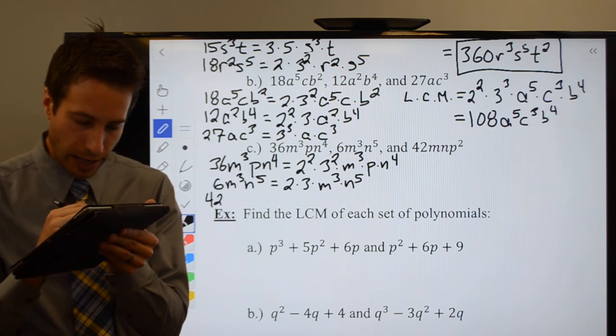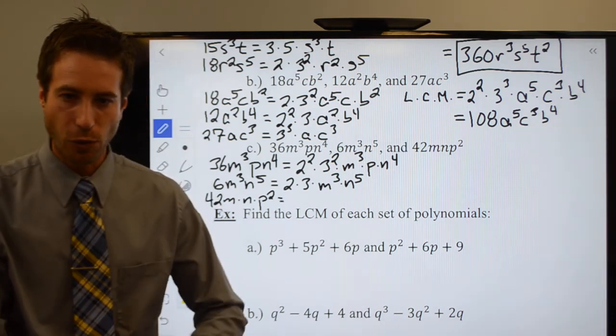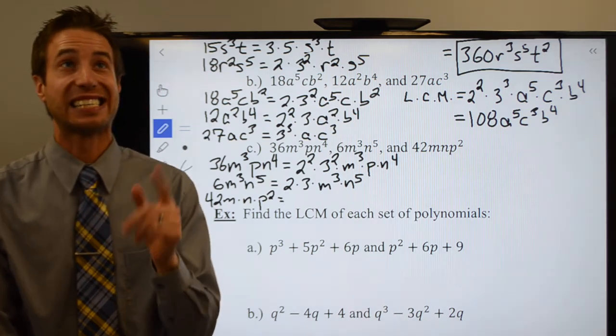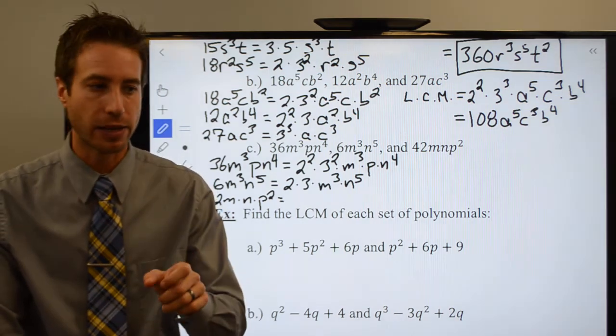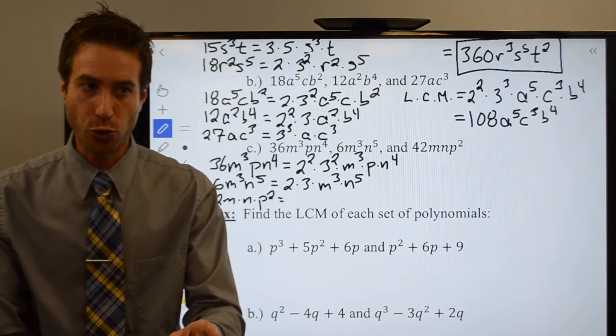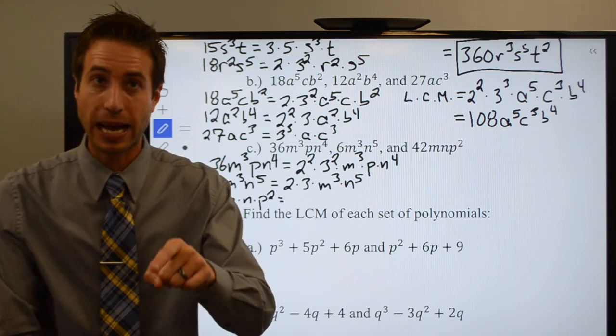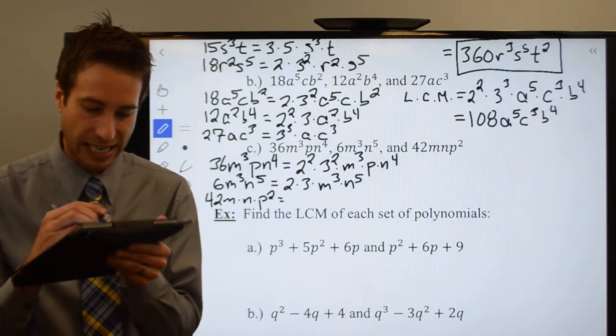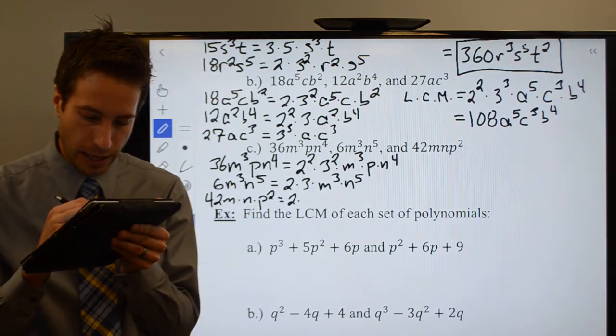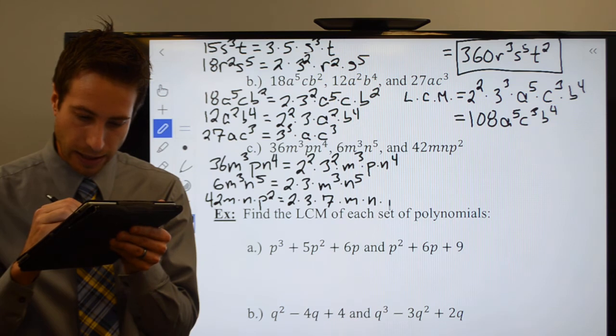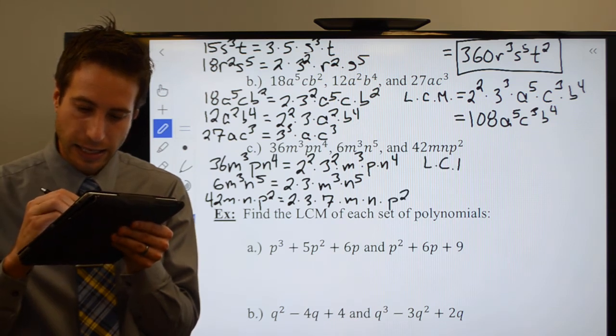And then my last one, 42mnp². Well, let's see, 42 is 6 times 7, right? But the 6 can be broken up into 2 times 3. So if you followed me there, that means I have 2 times 3 times 7. 2 would be prime, 3 would be prime, and 7 would be prime, so that's as far as I can go. So we have 2 times 3 times 7 times m times n times p².